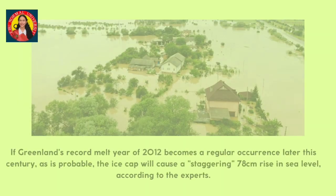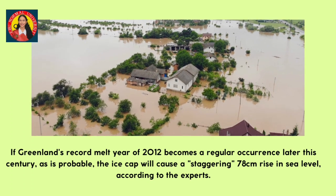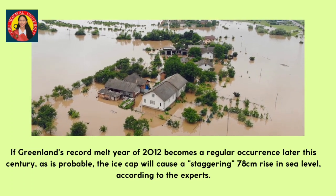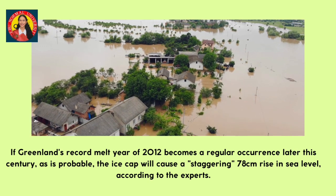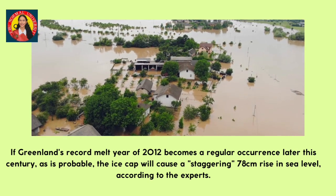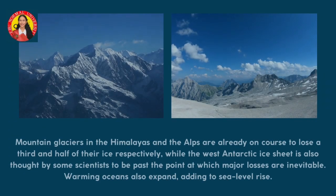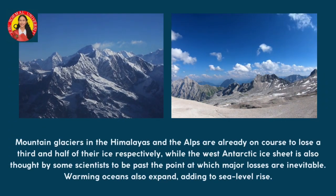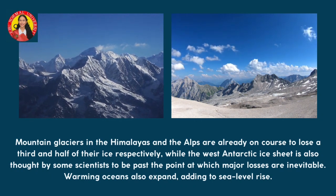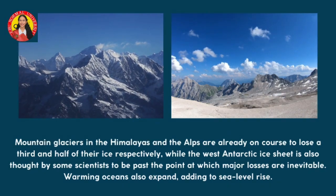If Greenland's record melt year of 2012 becomes a regular occurrence later this century, as is probable, the ice cap will cause a staggering 78 cm rise in sea level, according to experts. Mountain glaciers in the Himalayas and the Alps are already on course to lose a third and half of their ice respectively, while the West Antarctic ice sheet is also thought by some scientists to be past the point at which major losses are inevitable. Warming oceans also expand, adding to sea level rise.